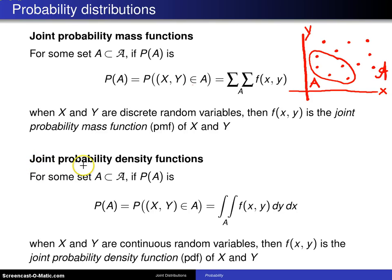Now in the case of joint probability density function, it looks about the same. For some set A, a subset of A, if P of A is—and the same thing goes on here—but you can see this time the double summation is replaced by a double integral. When X and Y are continuous random variables, then f of XY is the joint probability density function, abbreviated PDF, of X and Y.